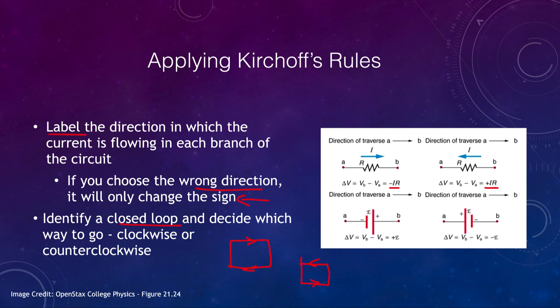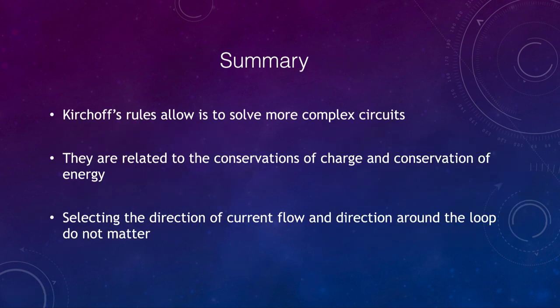So let's finish up here with our summary. And what we looked at were Kirchhoff's rules, which is a way to be able to solve much more complex circuits than the ones we looked at previously. They depend on the conservation of charge and conservation of energy. And selecting the direction of current flow and the direction around the loop does not matter. All it will do is change your signs. So you'll still be able to complete this even if you've made the wrong estimate as to what perhaps the direction of the current was.